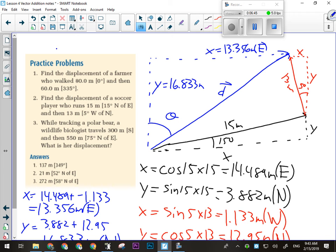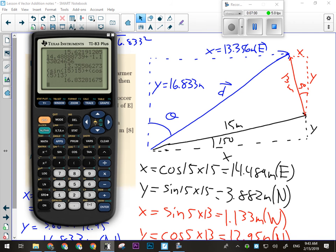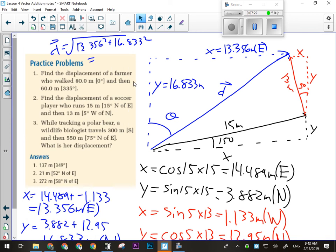So the displacement will be 13.356 squared plus 16.833 squared. And that'll give me my overall displacement's magnitude. So my overall magnitude here is 21.49 meters. Now, I only have two significant figures here, so that's actually going to just be 21 meters for my significant digits.